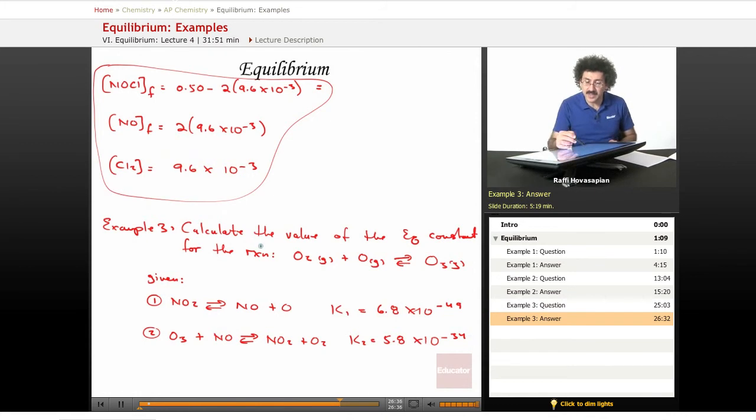So let's see what they're asking. They're asking you to calculate the value of the equilibrium constant for this reaction, given these two reactions and their corresponding equilibrium constants. We know from Hess's law that if we want to find a final reaction that involves some of these reactants, we have to rearrange them by either flipping them or multiplying them by constants.